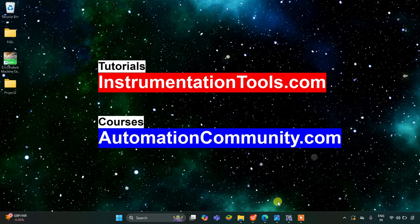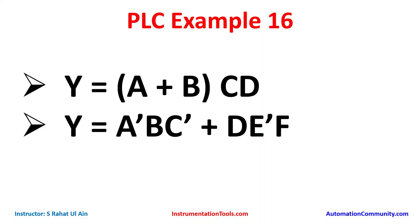Hello everyone, welcome to Automation Community. Today in this video we are going to develop ladder logic from a Boolean expression. So let's look at the examples. Example 1: Y is equal to (A plus B) into C D. And example 2: Y is equal to A-naught B C-naught plus D E-naught F.